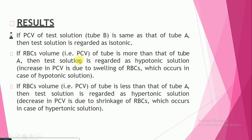If the red blood cell volume — the PCV — of tube B is more than that of tube A, then the test solution is regarded as hypotonic. The increase in PCV is due to swelling of red blood cells, which occurs in the case of a hypotonic solution.